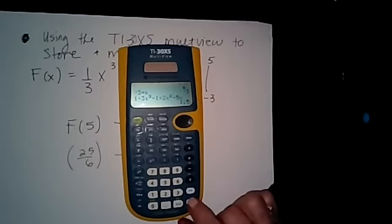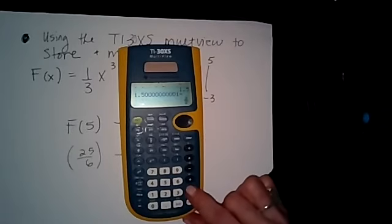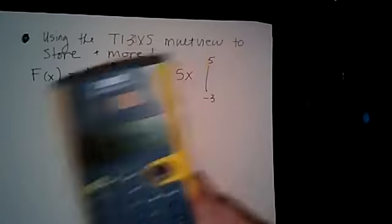All right, but I don't want it to be a decimal. How do I change it to a fraction? I go right above the enter and push that button. And that gives me 3 halves.